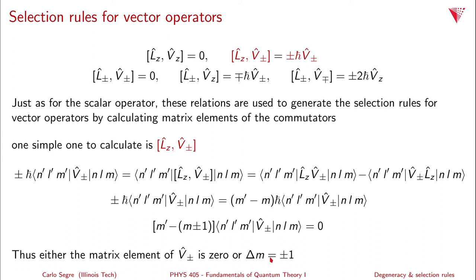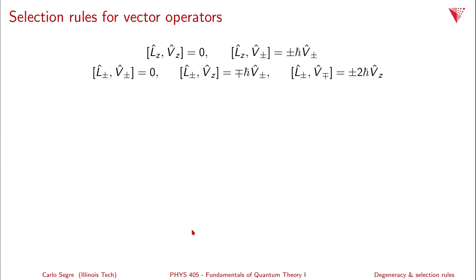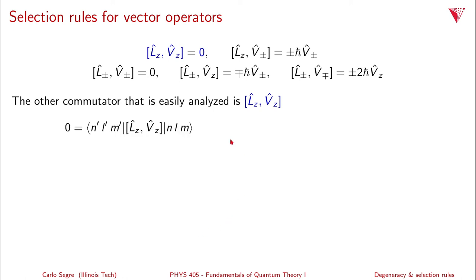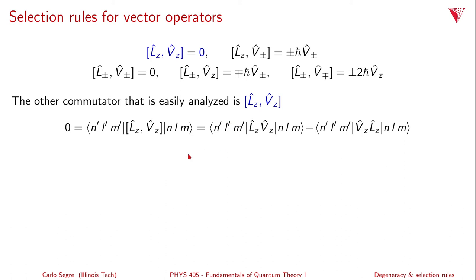Similarly, from [Lz, Vz] = 0, sandwiching and applying Lz gives M prime minus M times the matrix element of Vz equals zero. This gives a selection rule for the vector operator that delta M equals zero for the Vz component.